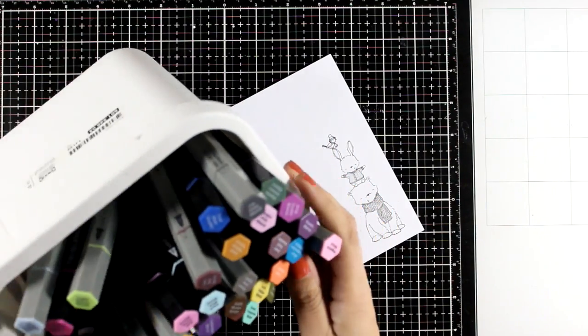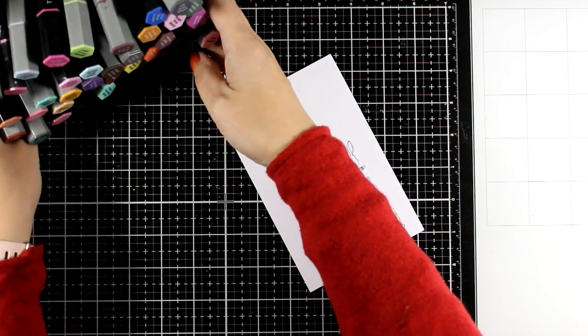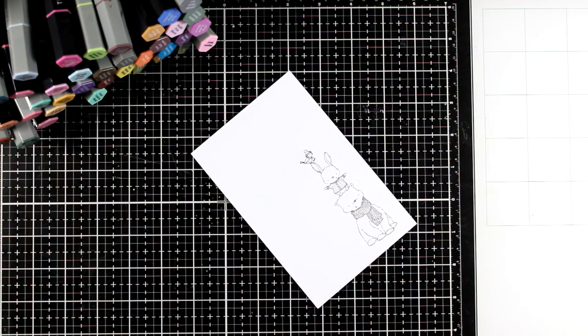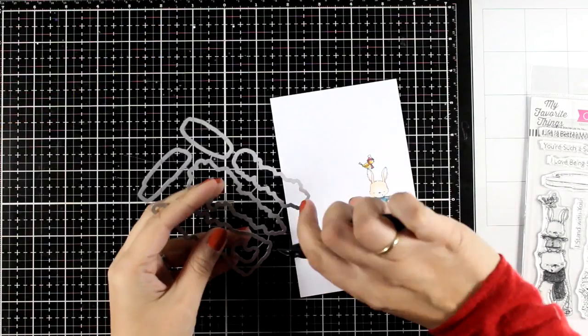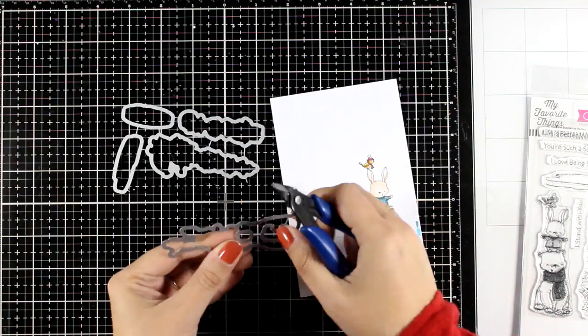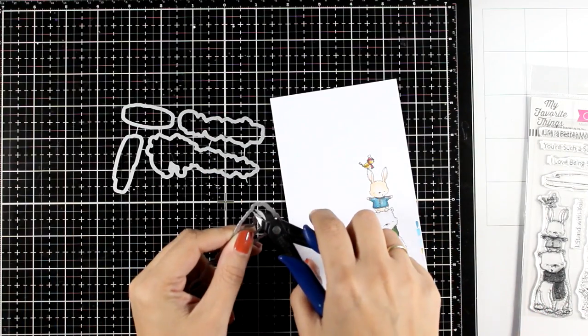And then I will color everything by using my Spectrum Noir Tripland Markers. These are my favorites just because I have all the three shades that I need in one barrel. I will do some basic and really quick coloring. And now I'm going to use the matching dies to cut out that stack of critters.